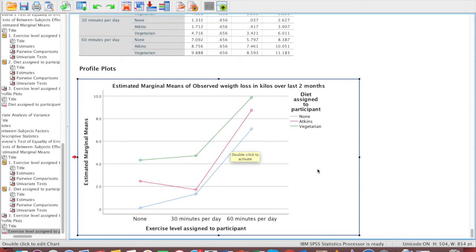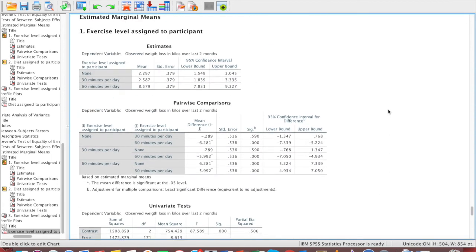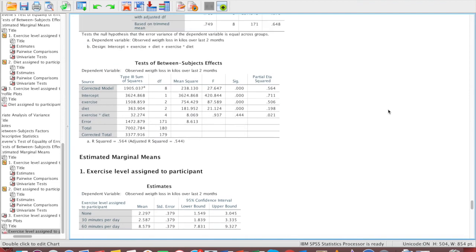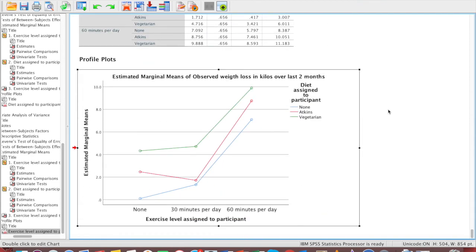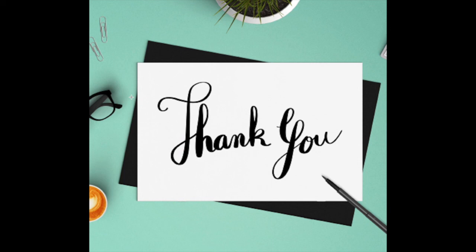So it seems like both independent variables, as they increase in the level, they are also putting more weight loss. So that is the interaction effect that we are looking for by using two-way ANOVA. And all the results here are pretty much comfortable. Thank you guys for listening to us.